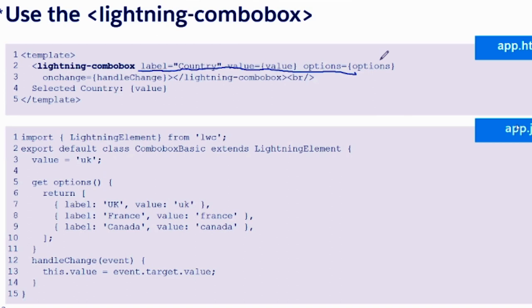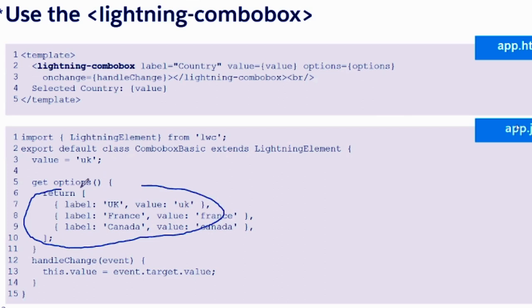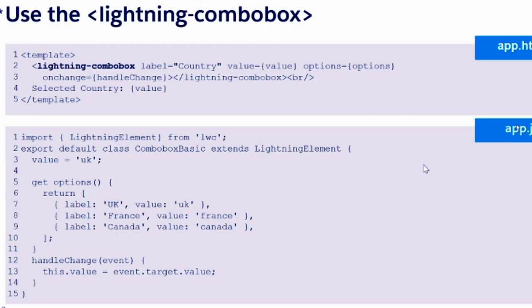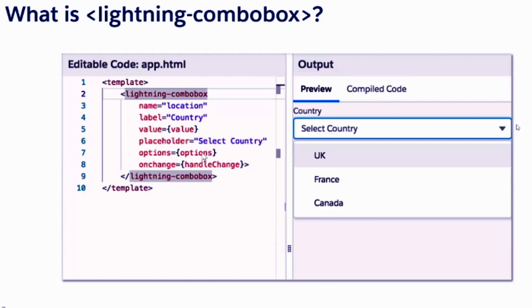Why are we using get? Can we use set here? We are not setting options in the system. We use get because this getter will be called when you bind options in the tag. When you say options as options, you will be getting options — you won't be setting them from here. That's why we are writing get. The options for a lightning combo box have to be passed as JSON — a collection of JSON objects or just one JSON object.